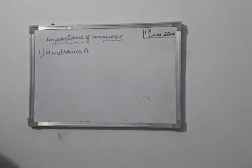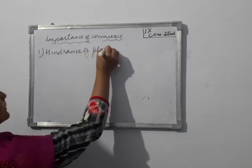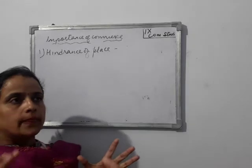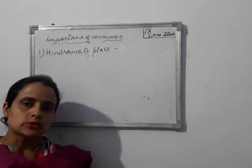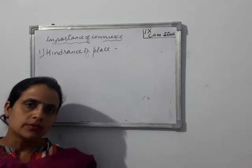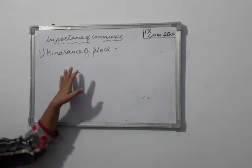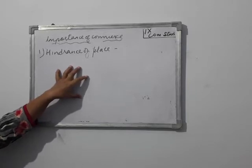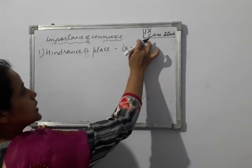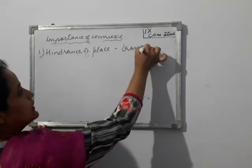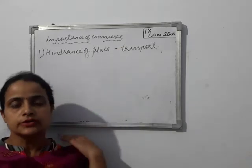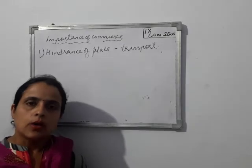The next importance of commerce is hindrance of place. Commerce removes the hindrance of place by moving goods from the place of production to the place of consumption. The place of production is entirely different and the producer has to bring those products to the reach of the consumers. This problem is solved by commerce through various modes of transport, which is also a part of commerce.